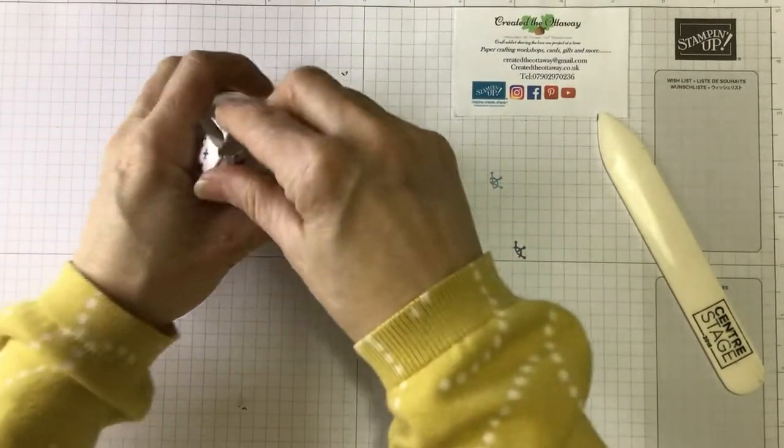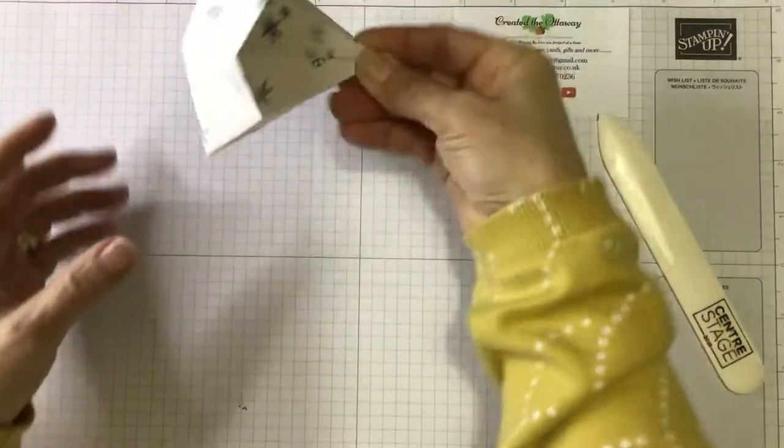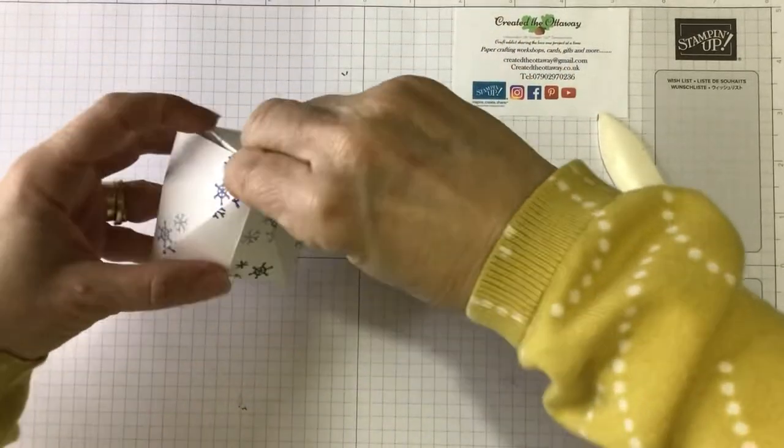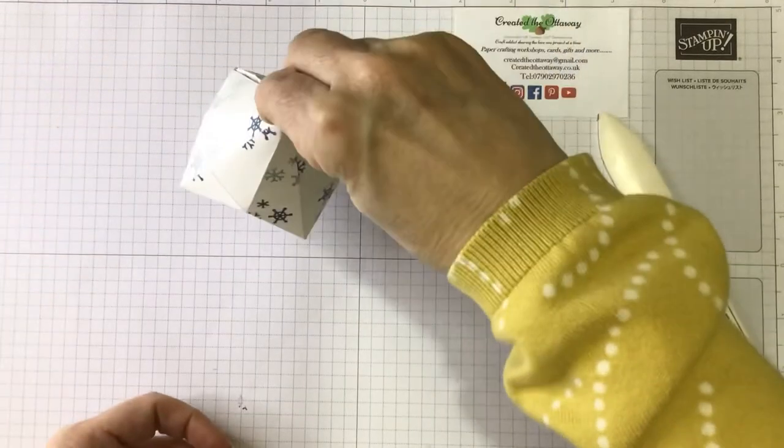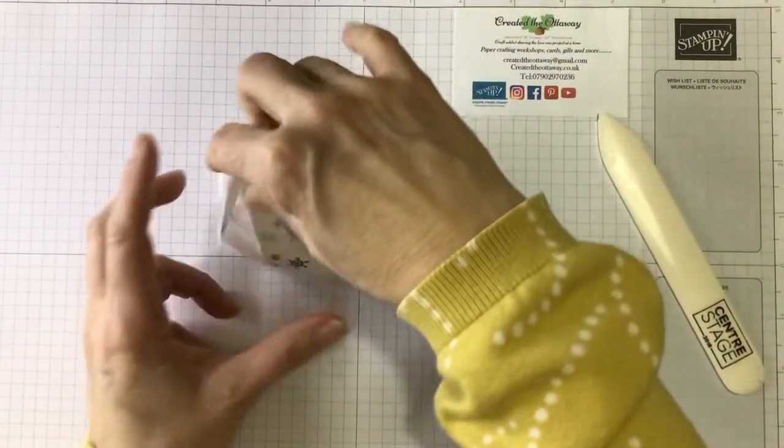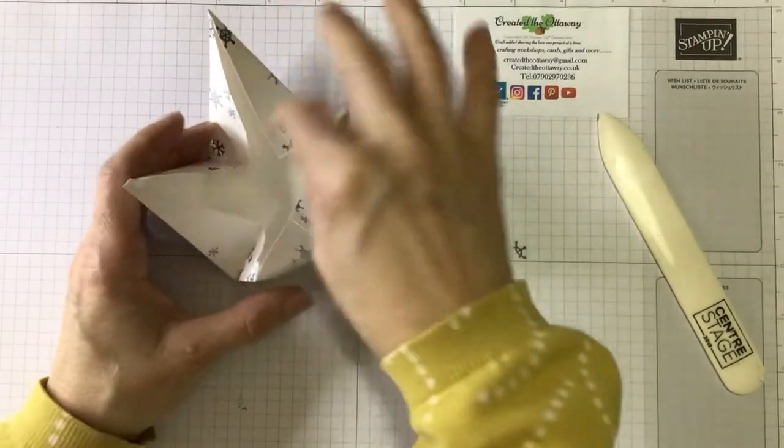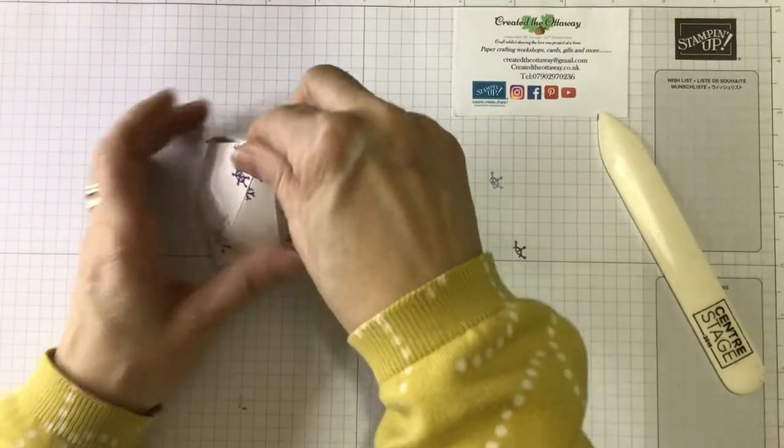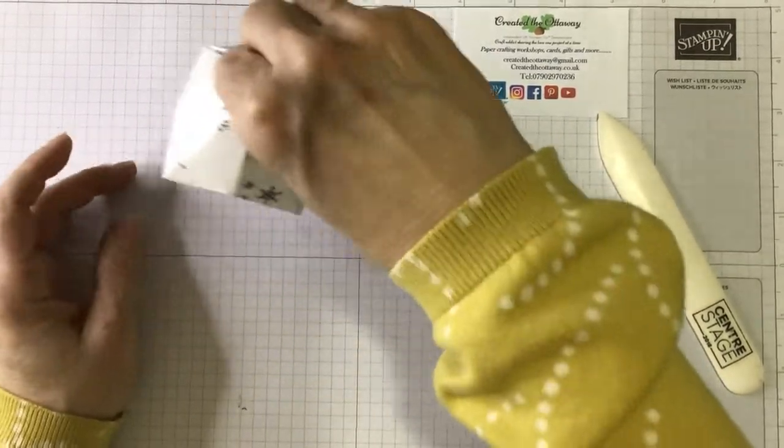And where I've stamped, I'm trying to hold it together so you can see, it's just a lovely, lovely shape. Now, a couple of things. If you want to put something inside, because you could just have them as hanging tree decorations like that,